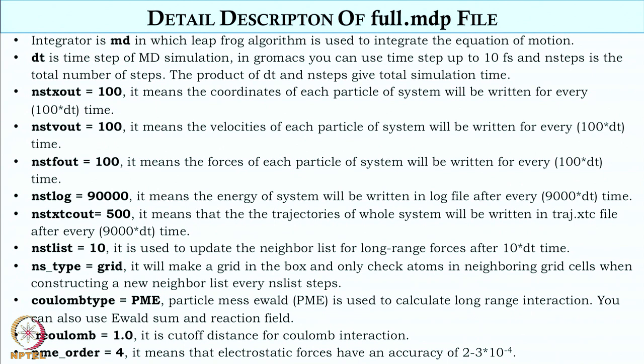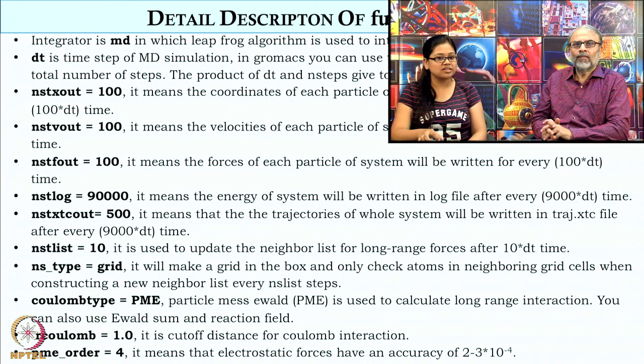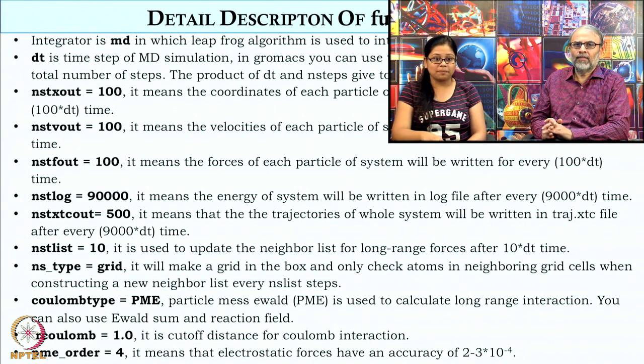NST_xtcout is 500, meaning the trajectory of the whole system is written after every 500 × DT time steps. There is a typo in the notes — the bold face parameter values are the important ones. The trajectory file is very important, so fewer time steps between saves gives better results. NST_list is the neighbor list update frequency as discussed earlier, and NS_type is grid for calculating the neighbor list using the grid method.